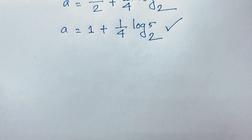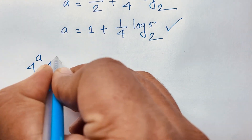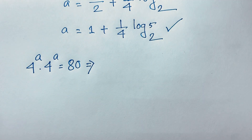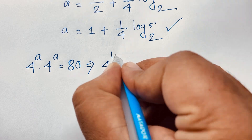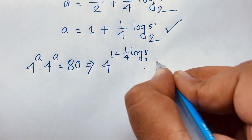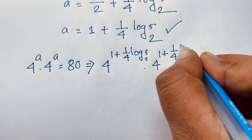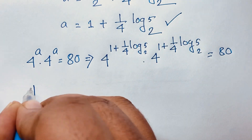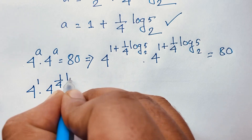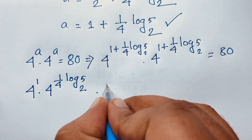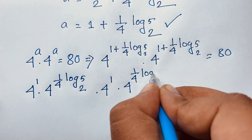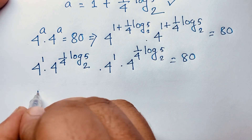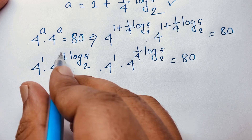Let's verify our answer. Our original question is 4 to the power a times 4 to the power a equals 80. Substituting a equals 1 plus one quarter log base 2 of 5, we get 4 to the power (1 plus one quarter log base 2 of 5) times 4 to the power (1 plus one quarter log base 2 of 5) equals 80. Using the exponent rule, this is 4 to the power 1 times 4 to the power one quarter log base 2 of 5, twice.